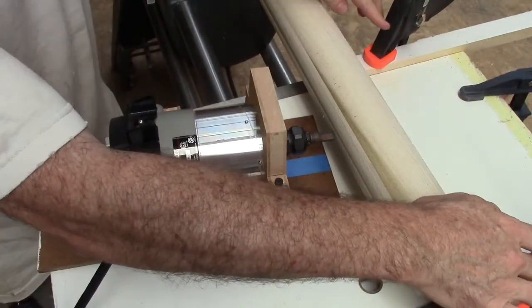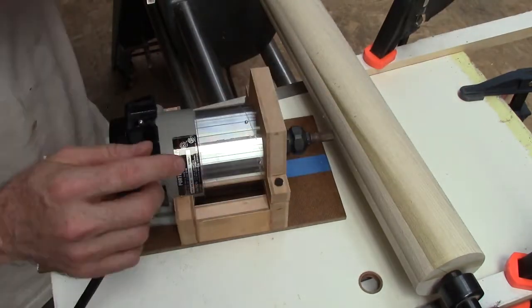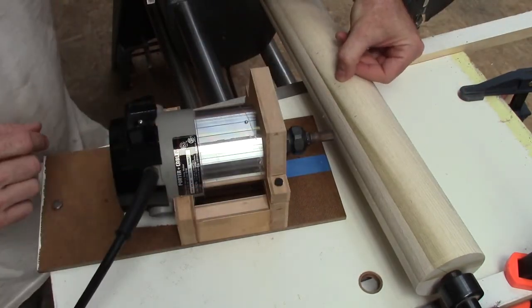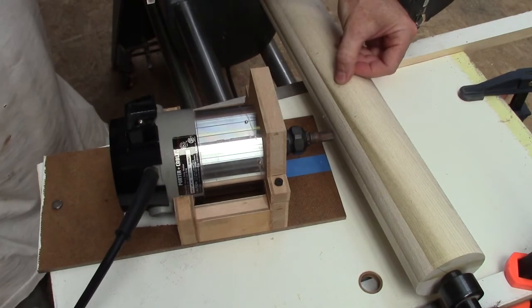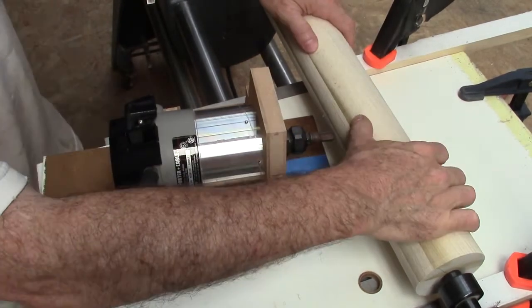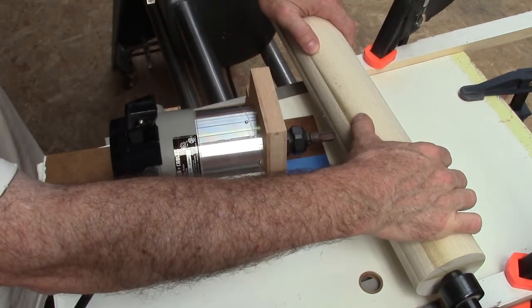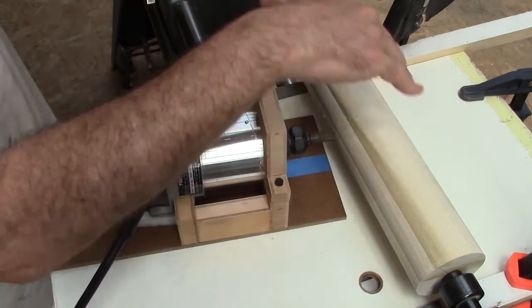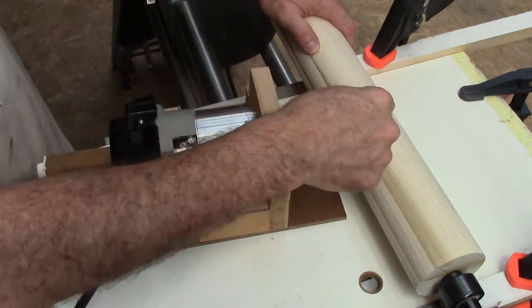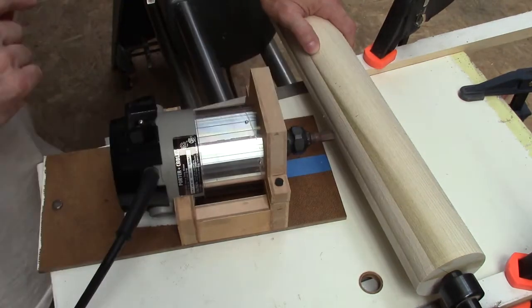A couple rails here to guide this back and forth. I've marked my center point of my radius and I also measured out 2 inches on either side, so that after the radius is cut in here I can measure back 2 inches and find the center again.